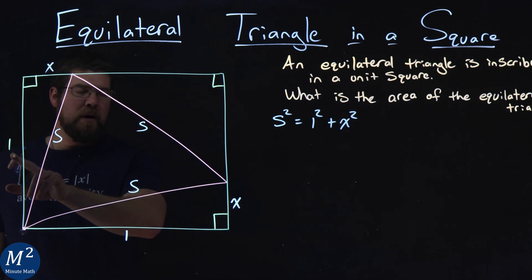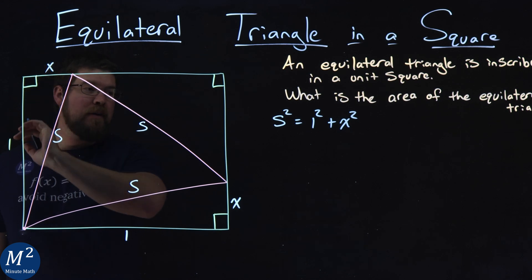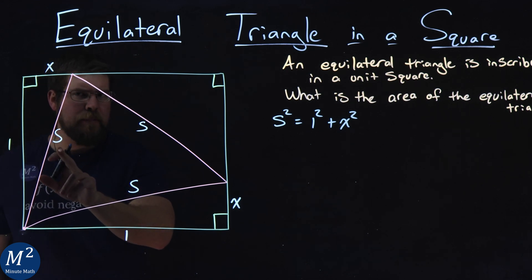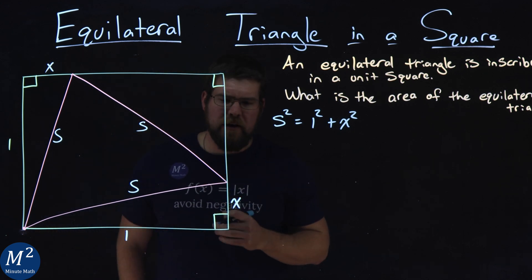Same idea, 1 squared plus X squared, wherever that missing value was, has to equal our side squared. So right there, we have that information to help us out here.